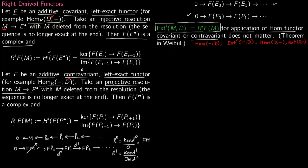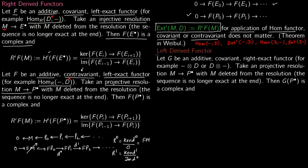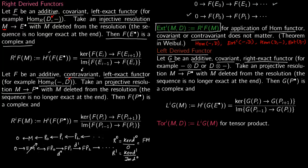Now let us see left derived functors. For left derived functors you start with G, which is an additive covariant right exact functor. For example, both - ⊗ D and D ⊗ - are right exact and covariant. Since we are going to talk about homology groups and we have a covariant functor, we take projective resolutions. So you take a projective resolution: P2, P1, P0.